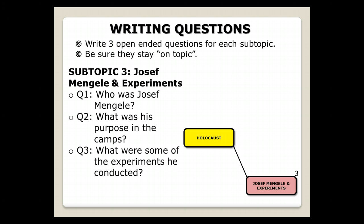You might need to, if you don't know much about Joseph Mengele, maybe you don't choose him as a subtopic. But maybe he's someone that you know about and that you're interested in, and that's something that you choose to do. But you need to be able to write those open-ended questions about each subtopic.